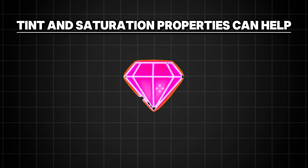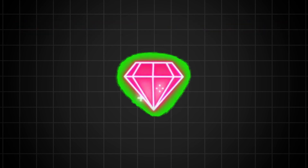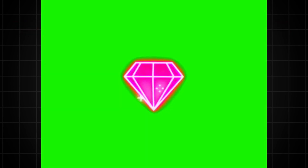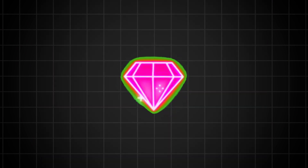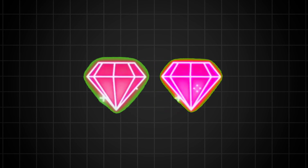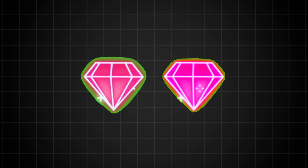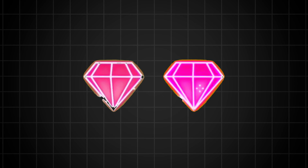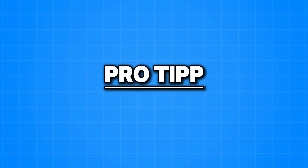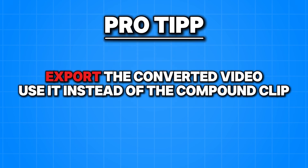In order to eliminate this, we need to remove the chroma key, increase the saturation and tint values, convert it into a compound clip, and then use the chroma key again. The difference is visible — even the basic setting gives a much better result, and when maxed out, not so many white parts disappear. A quick pro tip: it might be worthwhile to export the converted video on its own and use it instead of the compound clip, because if we wanted to convert it to another compound clip later on, CapCut would no longer allow it.